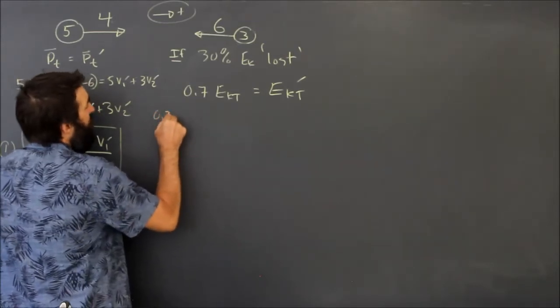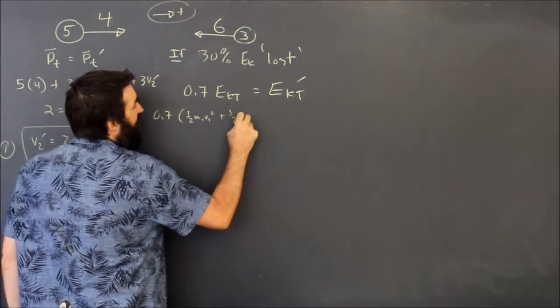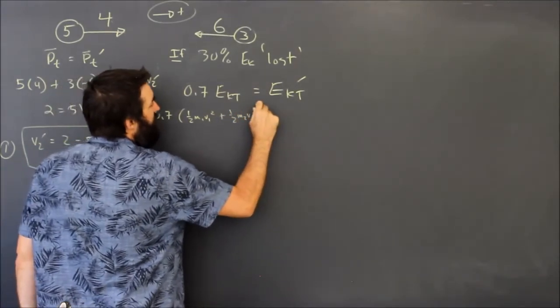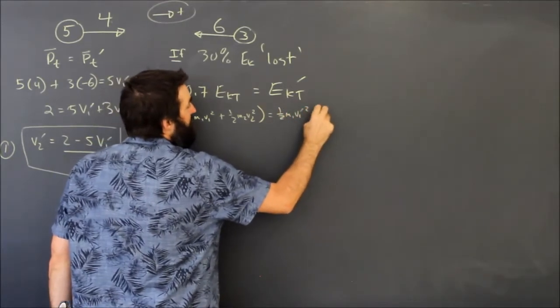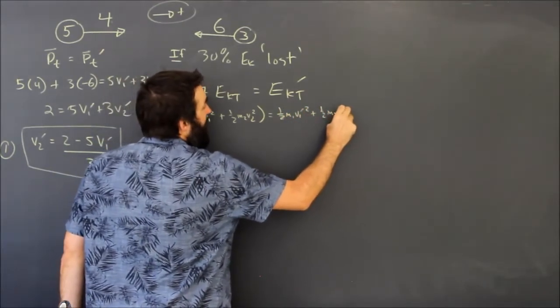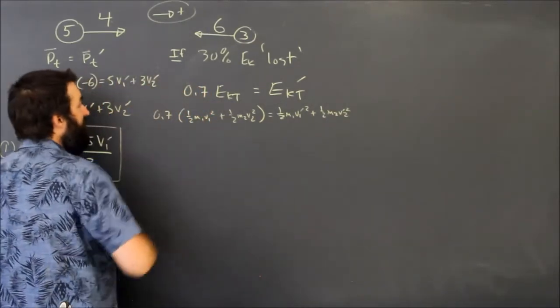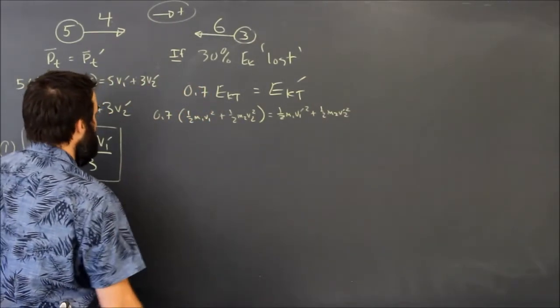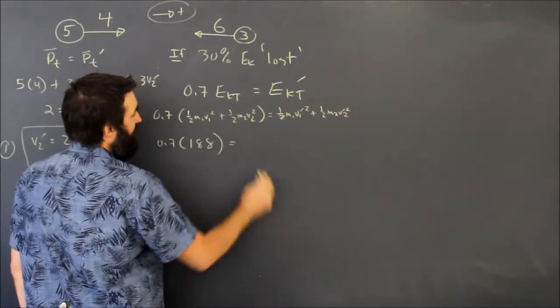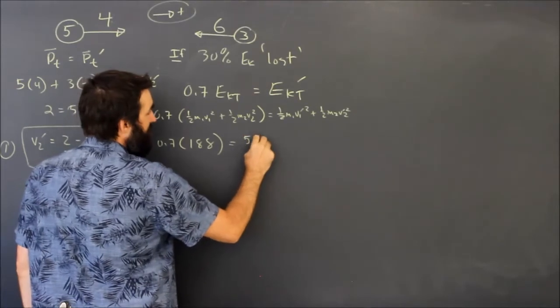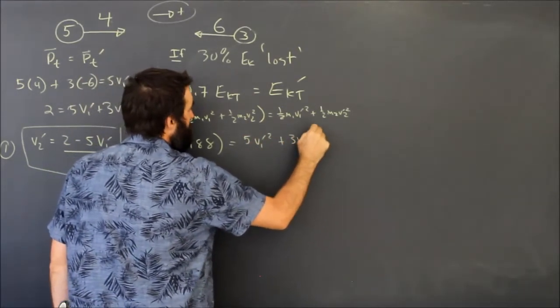Okay, and now it's just a matter of shoving it into the equation again. So we're going to say 0.7 times a half m1 v1 squared plus a half m2 v2 squared is equal to a half m1 v1 prime squared plus a half m2 v2 prime squared. Shoving our numbers in here, we're going to end up with 0.7 times 188, and that's going to be equal to 5 v1 prime squared plus 3 v2 prime squared.